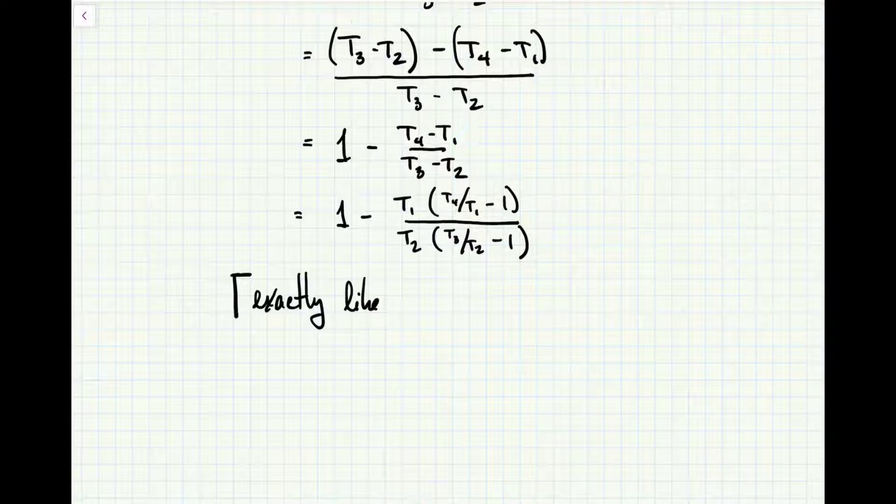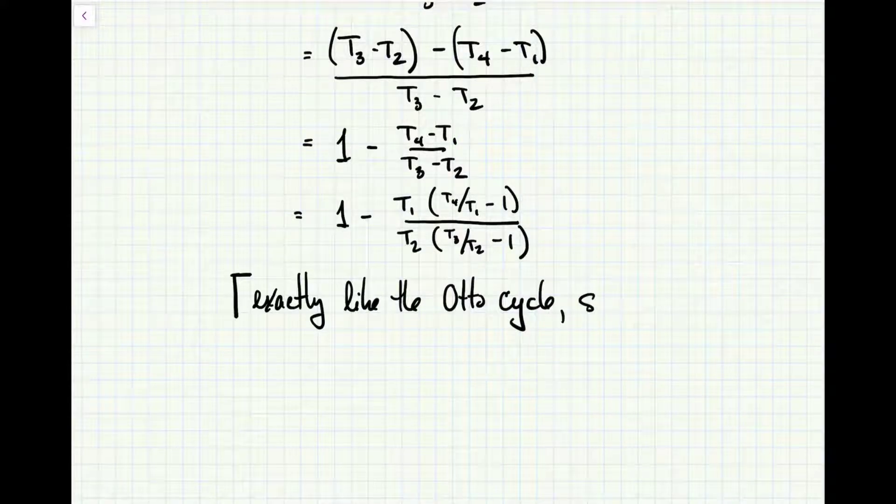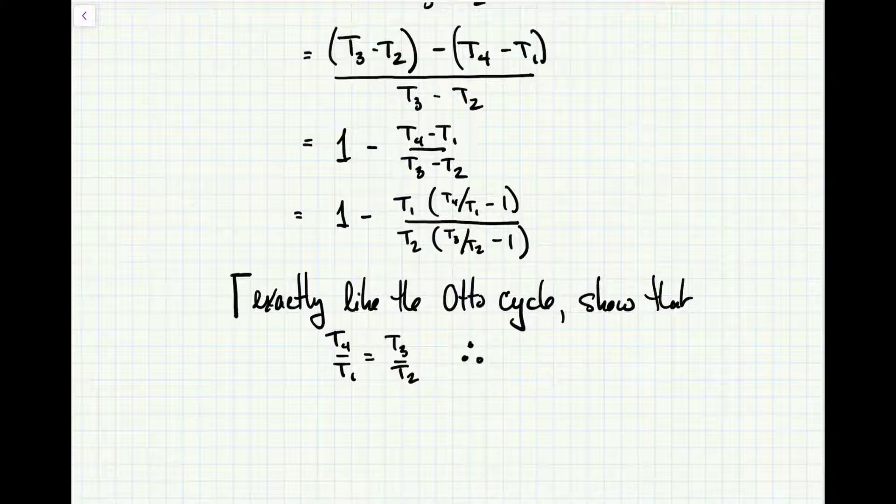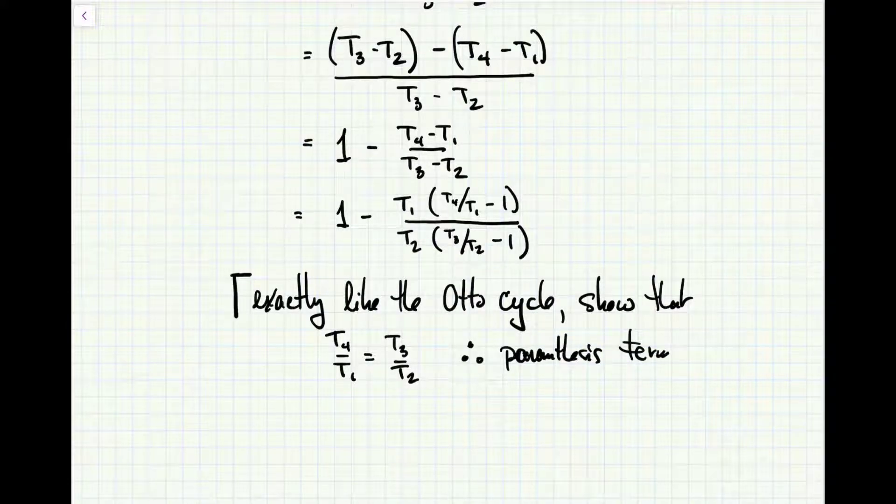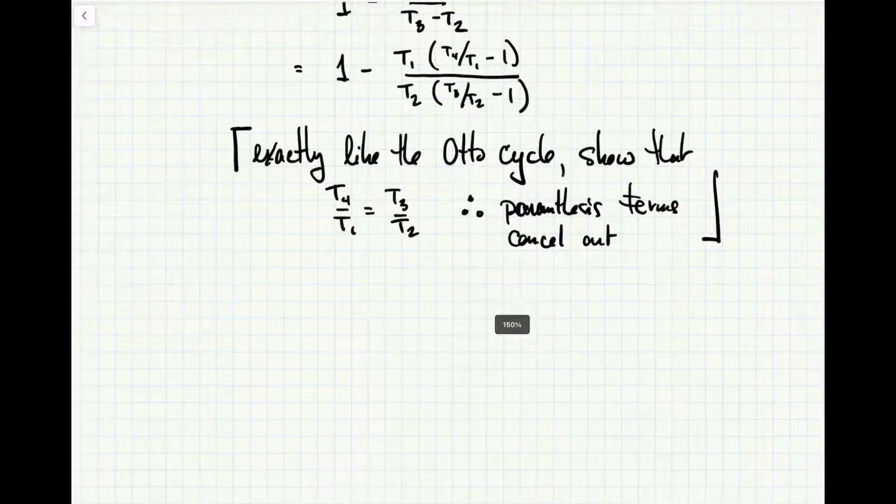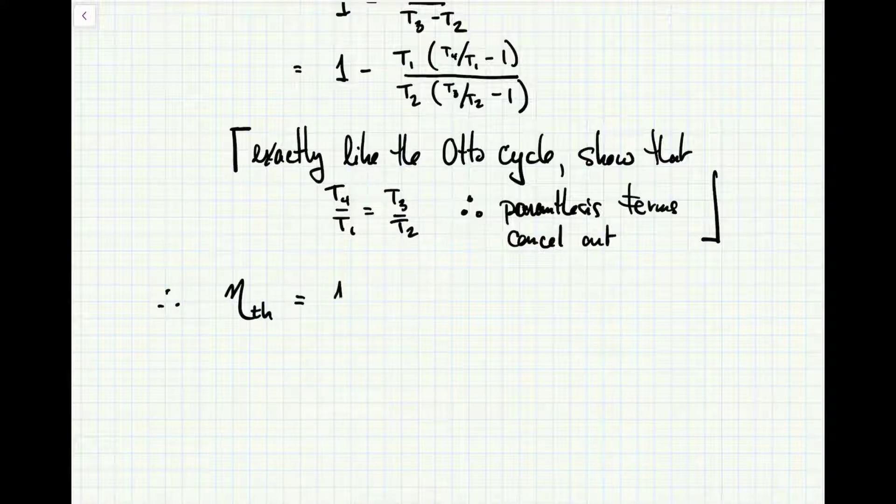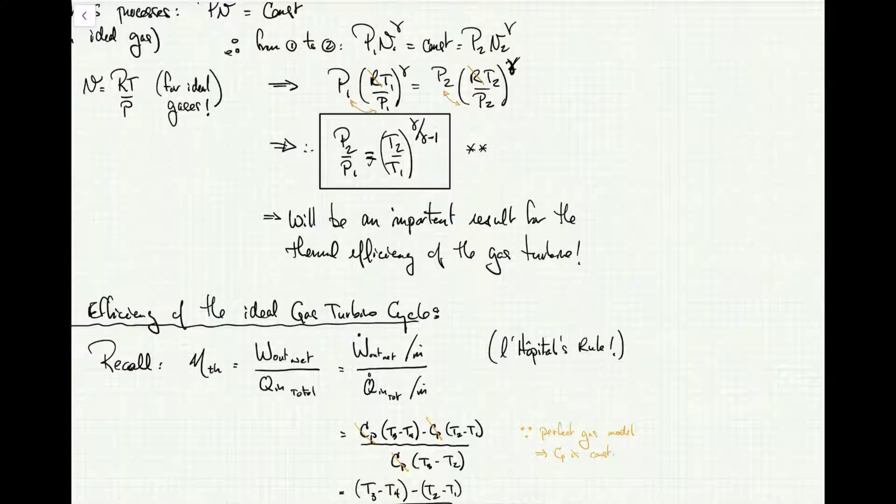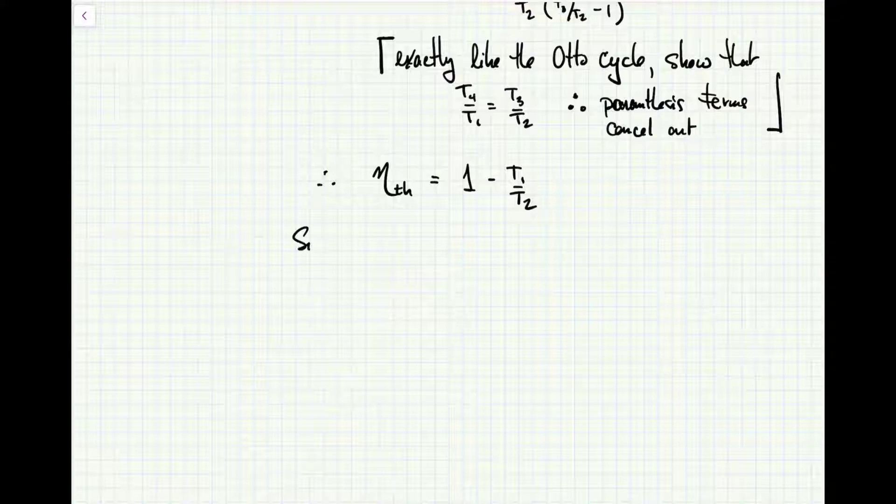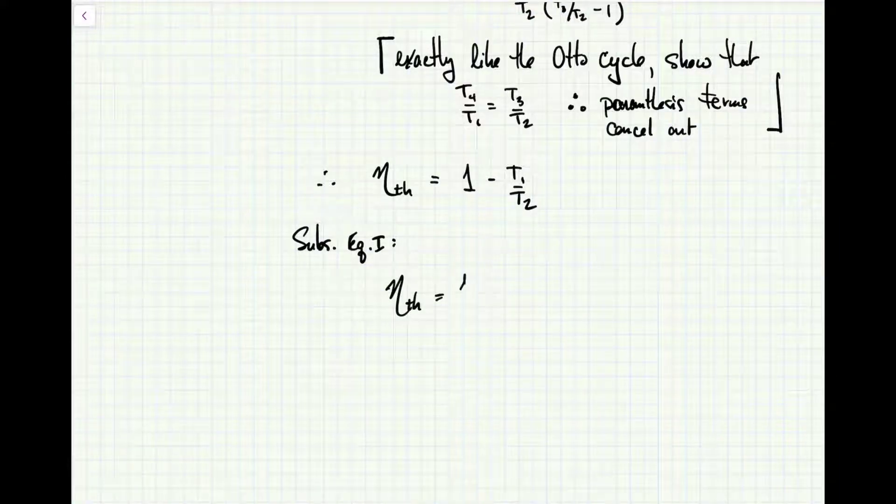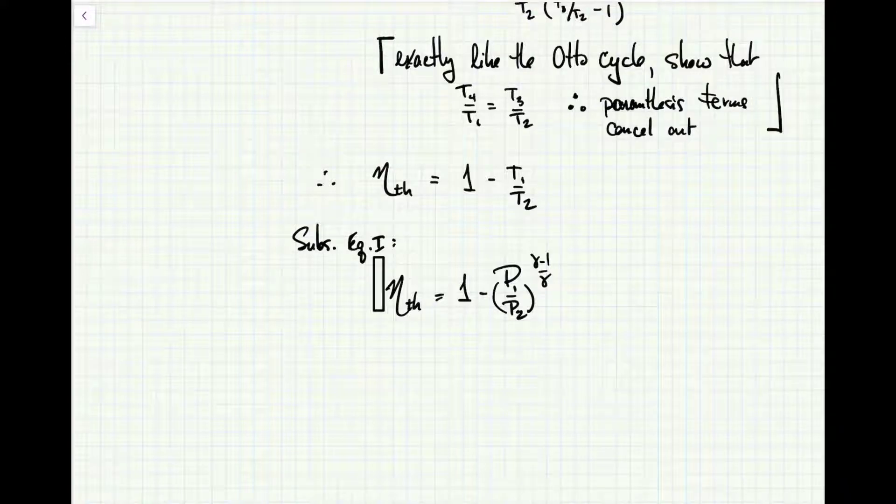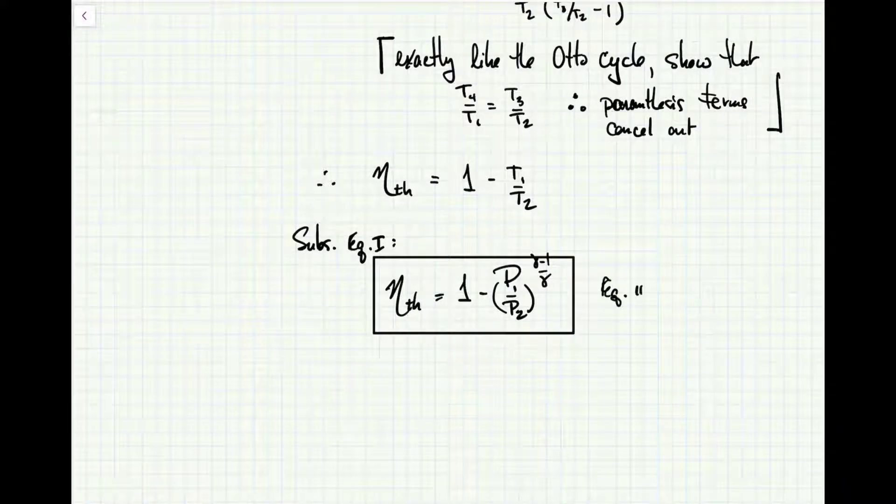You can show, just like we did in that previous exercise, that T_4 over T_1 equals T_3 over T_2, and that's going to make those bracketed terms disappear. The terms in parentheses cancel out, giving us a much simpler result for the thermal efficiency of the cycle: 1 minus T_1 over T_2. Now let's go back to equation 1 that relates temperature to pressure. Rearranging equation 1 gives us this fabulous result for the thermal efficiency of the entire cycle in terms of the pressure ratio across the compressor only.